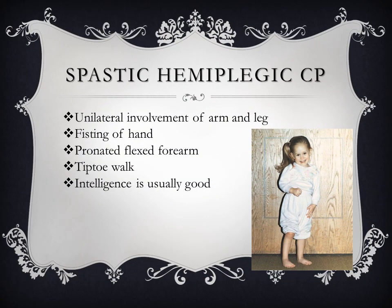Spastic type can be subclassified according to limb involvement: hemiplegia, diplegia, and quadriplegia. In spastic hemiplegic cerebral palsy, one side of the body — either right or left — is involved. Patients typically have fisting of the hand, pronated flexed forearm, and tiptoe walking on the affected side. Intelligence is usually good.